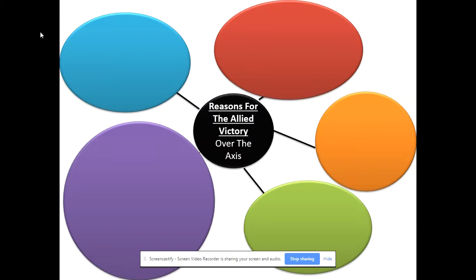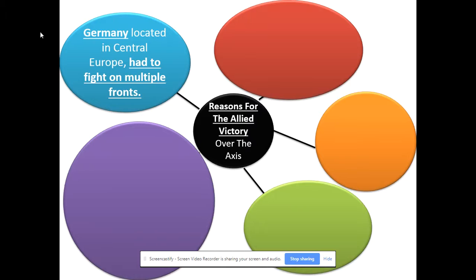If you want to create a graphic organizer you can, or you can bullet this. We have five reasons, basically, for Germany's defeat — or we could say the Allied victory. And we're going to go right around the circle here. The first reason is going to be: location, location, location.